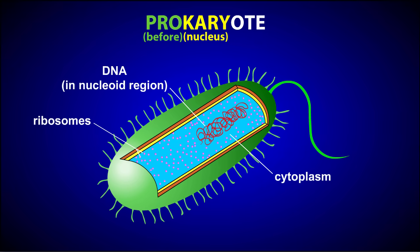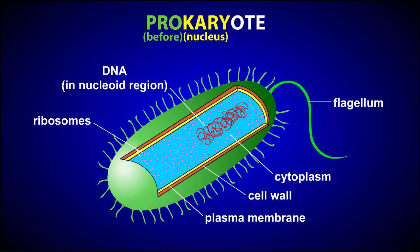Prokaryotes also have a cell wall that surrounds the plasma membrane. The composition of the cell wall depends on whether the cell is an archaean or a bacteria, but basically it consists of complex polysaccharides. Prokaryotes also often possess one or more flagella, which are used for movement.